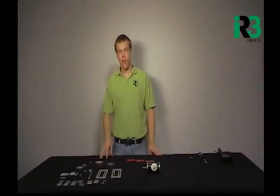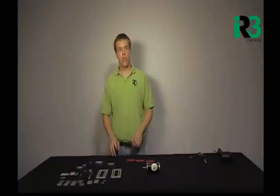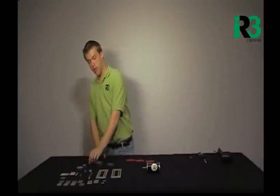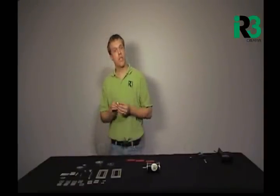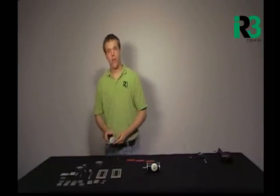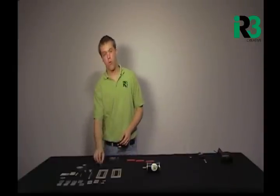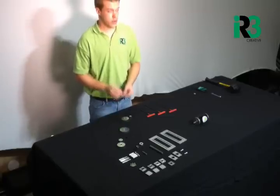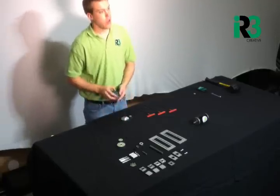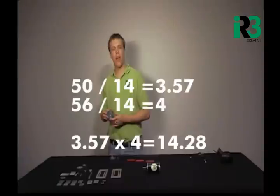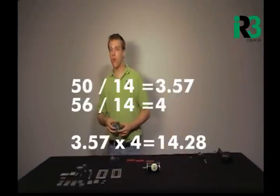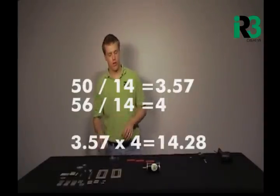We're going to go ahead and start by deciding what we're going to use for our gear ratio. For this setup, we're going to use a 14-tooth SIM gear, mated with a 50-tooth cluster gear, paired with a 14-tooth cluster gear, and a 56-tooth output gear, making for a total gear ratio of 14.3 to 1.